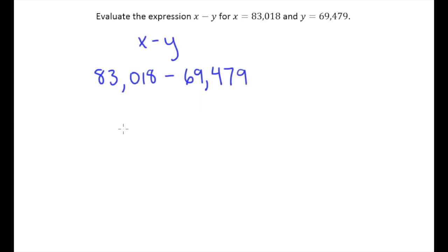And from this point we know what to do. We set up our vertical subtraction problem, lining up our place values, putting the larger number on top, and then we proceed with our subtraction.